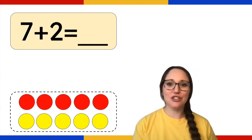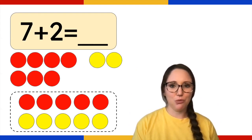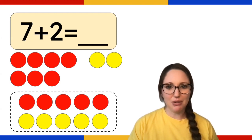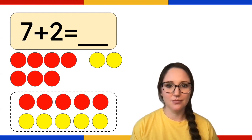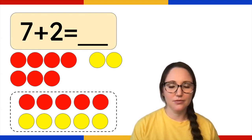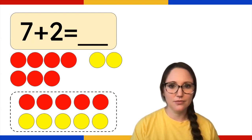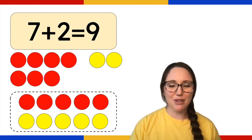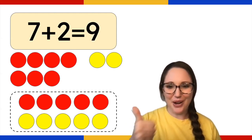Seven plus two. Remember, make your picture with your objects, then write your number sentence and the answer. Seven plus two is nine. Great work.